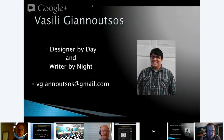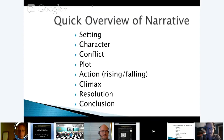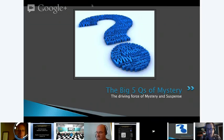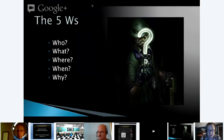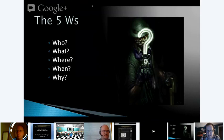Really quickly: setting, character, conflict, plot, action, climax, resolution, conclusion. The big five cues of mystery are the driving forces of mystery and suspense. Without these questions, you don't have a mystery and you don't have a story. The big five W's: who, what, where, when, and why. You need to know your five W's before you can really write your mystery.